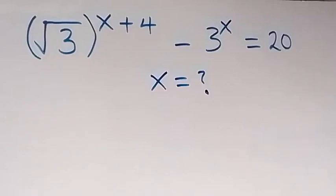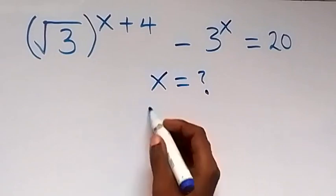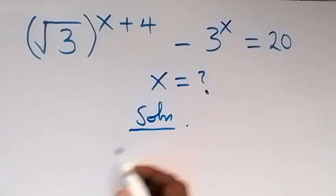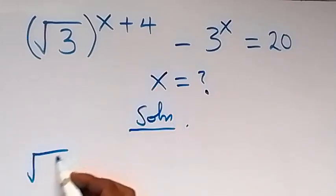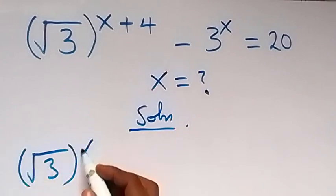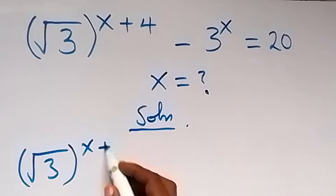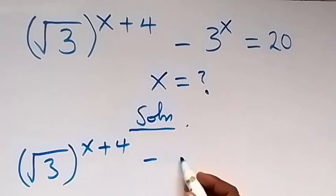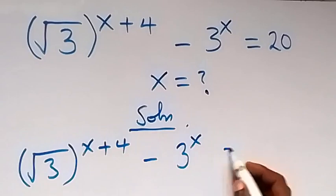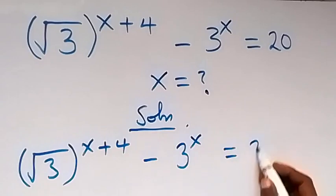Hello, you are welcome. We are going to solve for x in this exponential equation. From what we are given: square root of 3 raised to the power x plus 4, then minus 3 raised to the power x, equals 20.